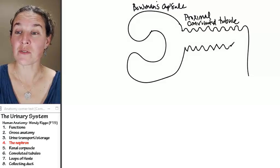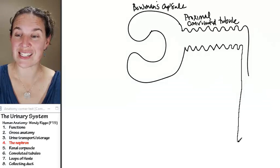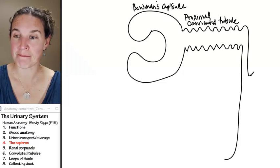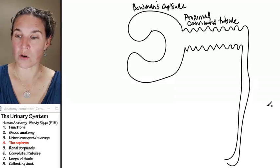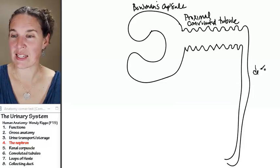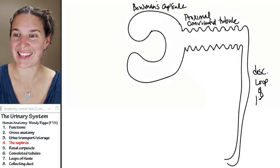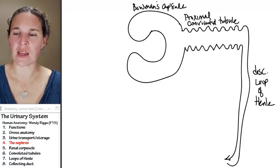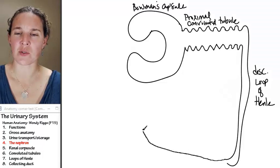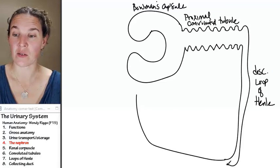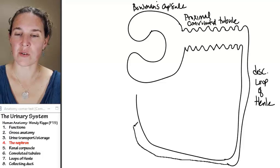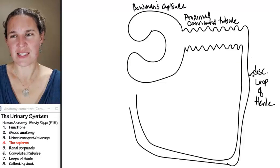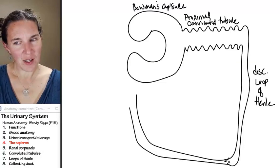The structures of these nephron parts are linked to their functions. The proximal convoluted tubule flows into a structure called the descending loop of Henle. This is the descending loop of Henle. And I wonder if they're going to make us rename that thing because I'm sure Henle is a guy, right?